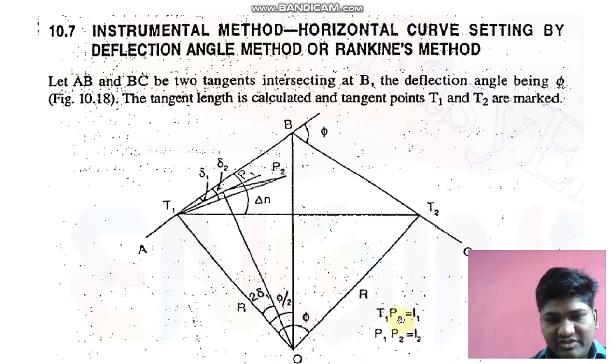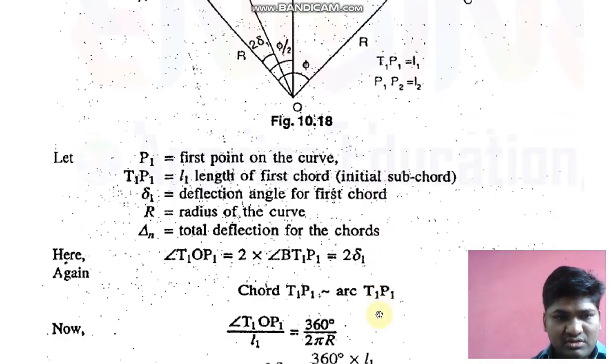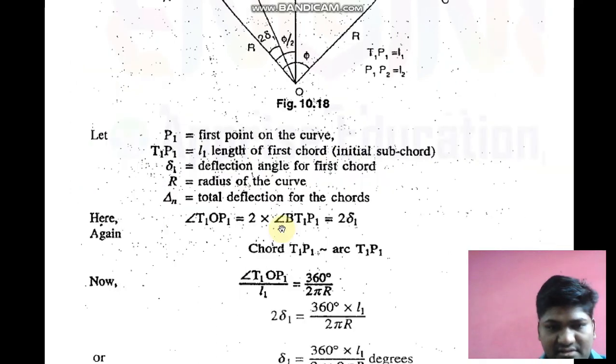For derivation purposes, we will assume this triangle. In this triangle, we say that T1P1 is L1, so this is T1, this point is P1, so T1P1 length is L1, and P1P2 length is L2. P1 is the first point on the curve, and T1P1 is the length of the first chord.